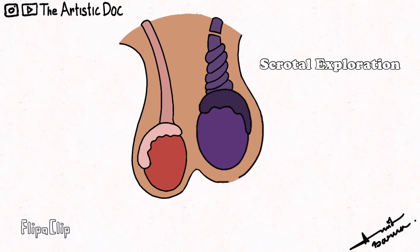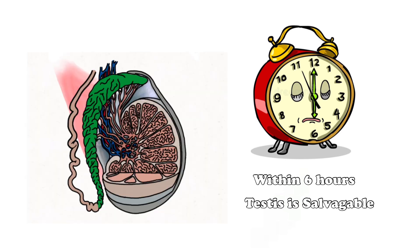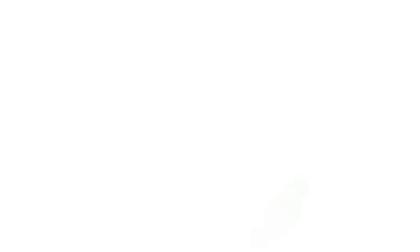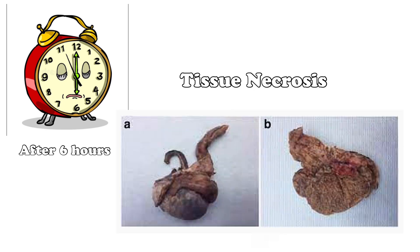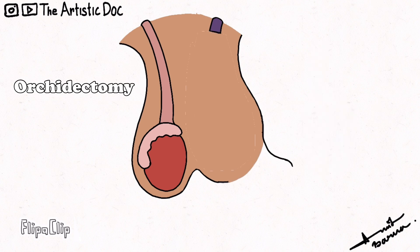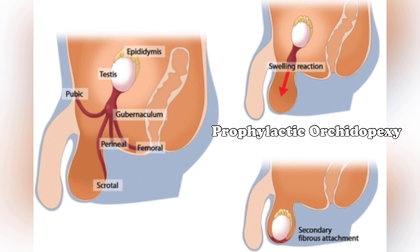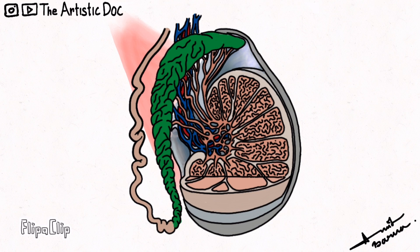The management is scrotal exploration. If surgery is done within six hours, the testes is 100% salvageable — we simply de-rotate the testes and perform orchidopexy. After six hours, there is a chance of tissue necrosis and infertility, so orchidectomy may be required. Prophylactic orchidopexy of the other side is also done in the same setting.